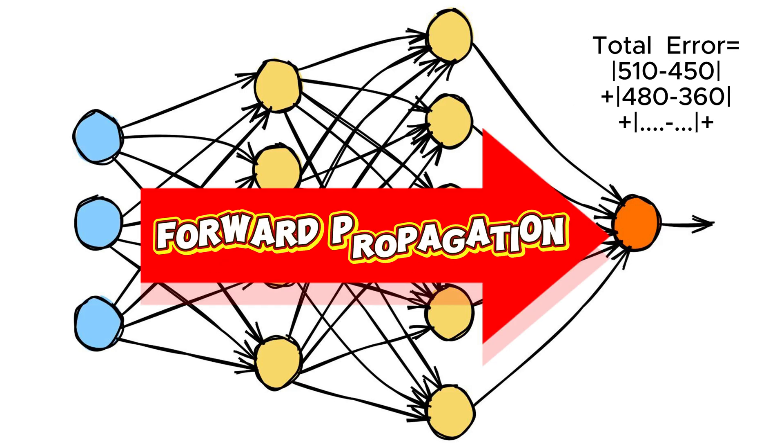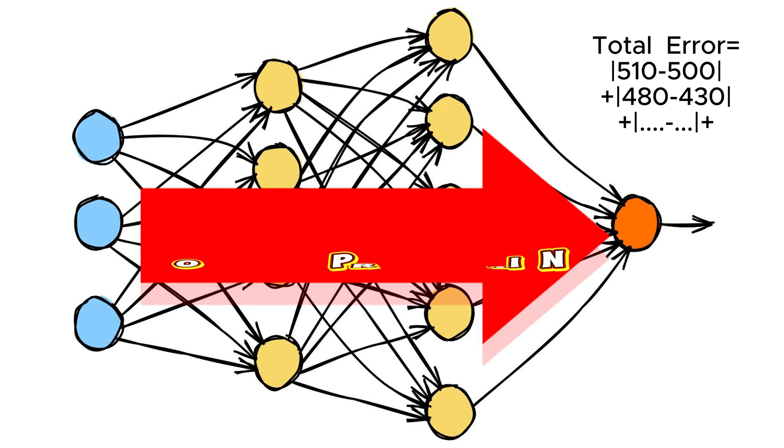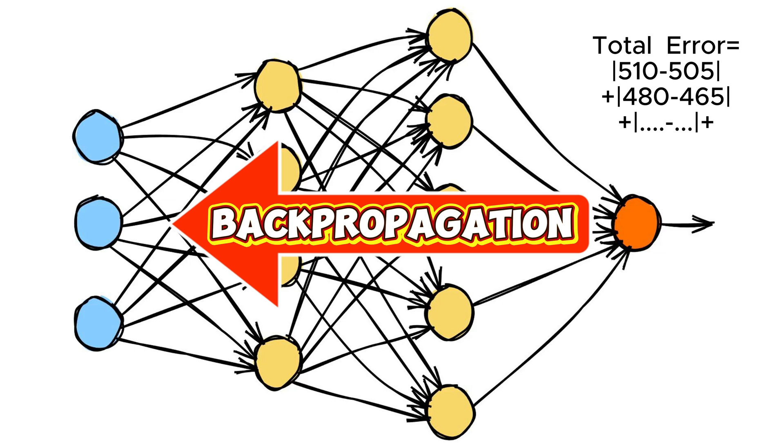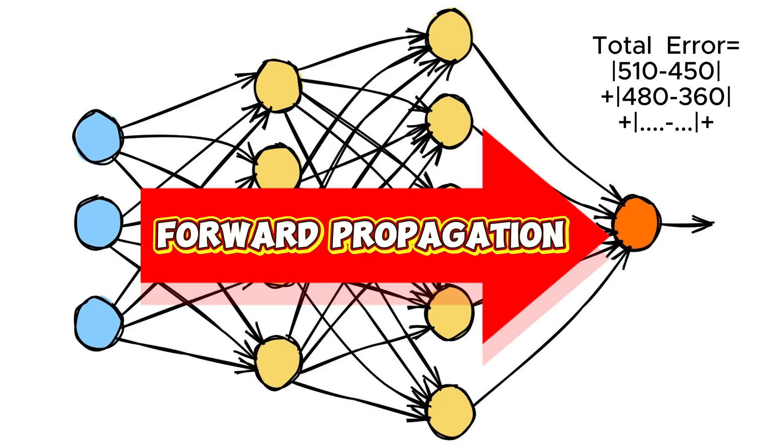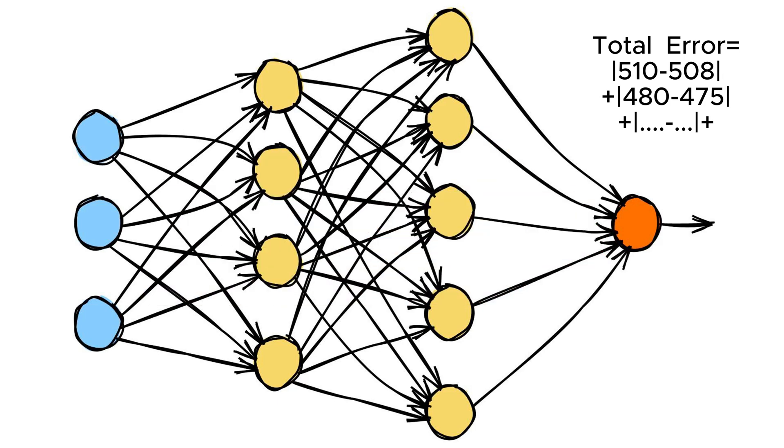The error correction is done through multiple iterations. Each iteration consists of a complete forward pass followed by a complete backward pass to adjust weights. The forward pass calculates the error and the corresponding backpropagation adjusts the weights accordingly. In one iteration, the forward and backward propagations are performed over the entire dataset intended for training.